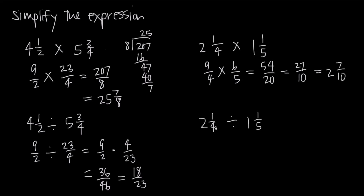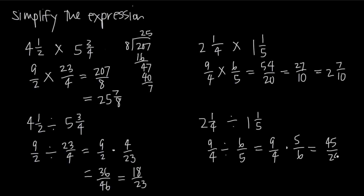Let's look at one more division problem. We change both to improper fractions: 4 times 2 is 8, and 8 plus 1 is 9, so 9 over 4. Then 5 times 1 is 5, and 5 plus 1 is 6, so 6 over 5. Instead of dividing by 6 over 5, we multiply by its reciprocal 5 over 6. So 9 fourths times 5 over 6: 9 times 5 is 45, and 4 times 6 is 24. Dividing both by 3 gives 15 over 8, which equals 1 and 7 eighths. And that's how you do multiplication and division with mixed numbers.